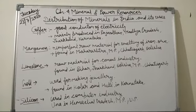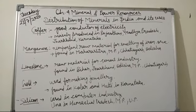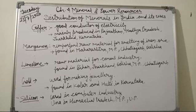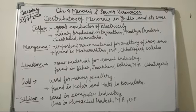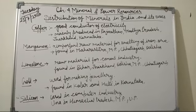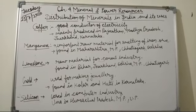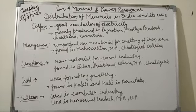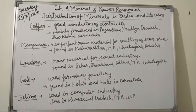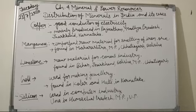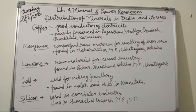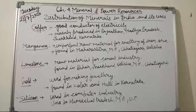The next mineral is manganese. It is an important raw material for the smelting of iron ore and is also used for manufacturing ferro alloys. It is used in the iron and steel industry because it adds strength to steel. Manganese deposits in India are mainly found in Maharashtra, Madhya Pradesh, Chhattisgarh, Odisha, Karnataka and Telangana.